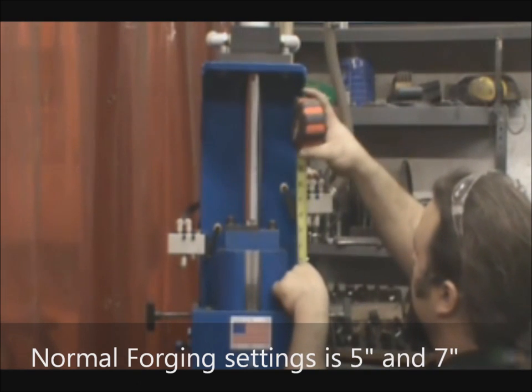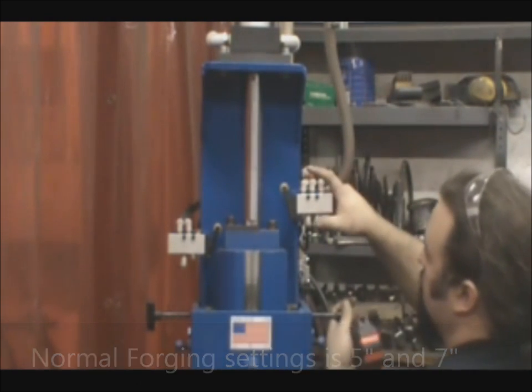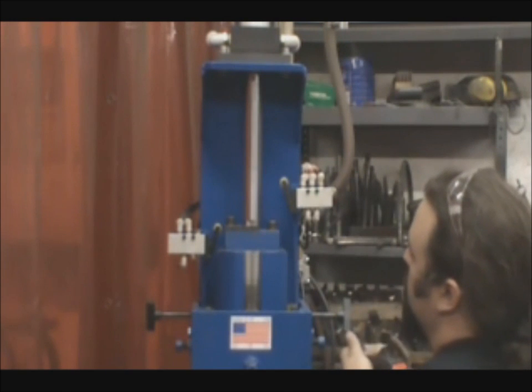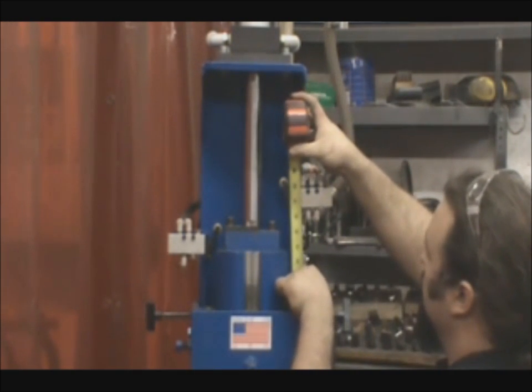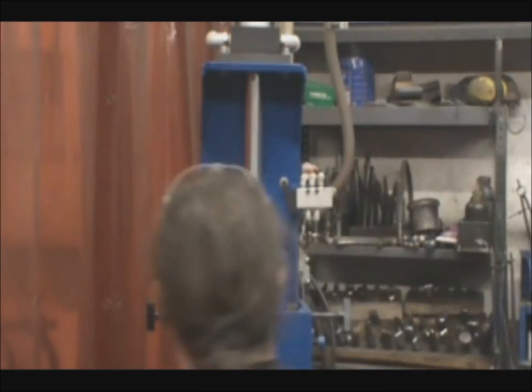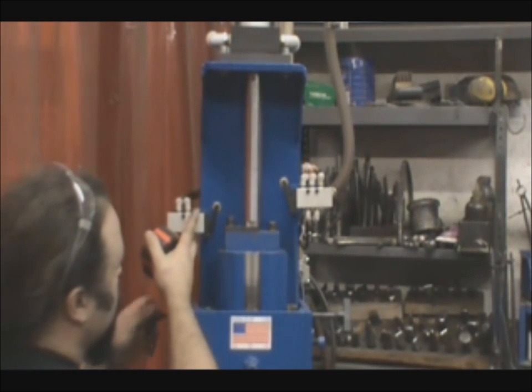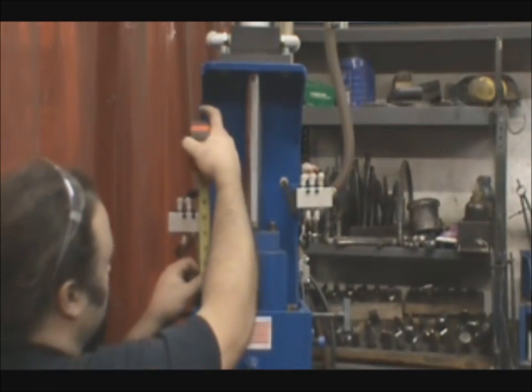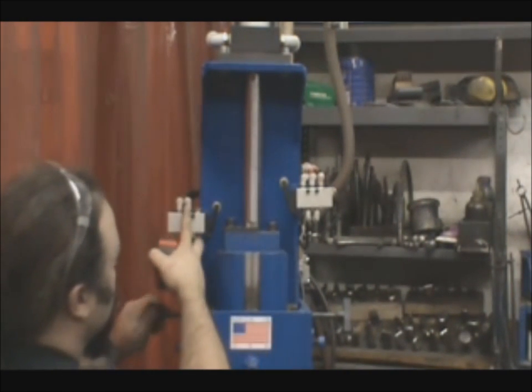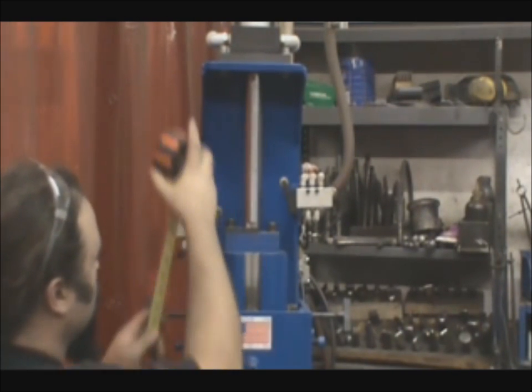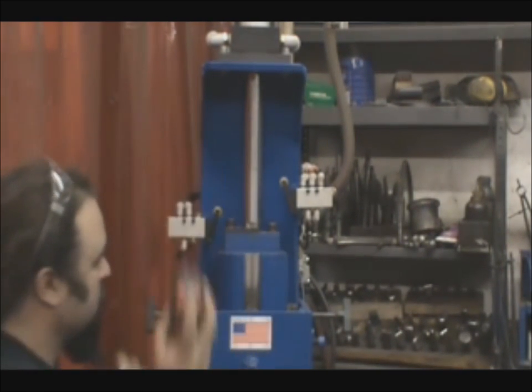Now you have to take all of these measurements that I'm providing you with here with a little bit of a grain of salt. Every hammer is going to be a little bit different. What I like to do is take a sharpie and mark on the side of the hammer once I find that sweet setting for what my normal setup is. So you'll just have to work with it a little bit yourself.